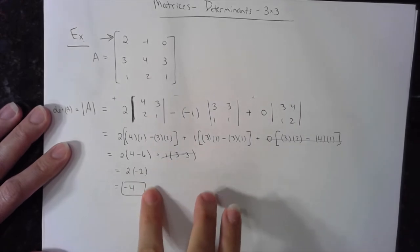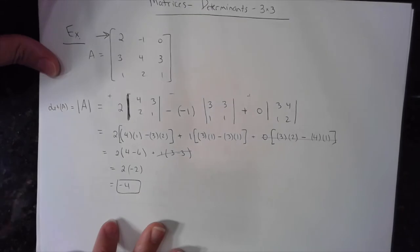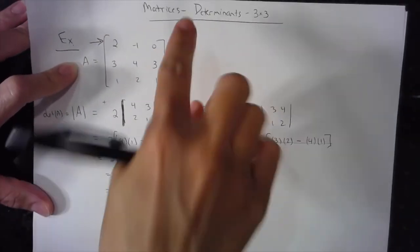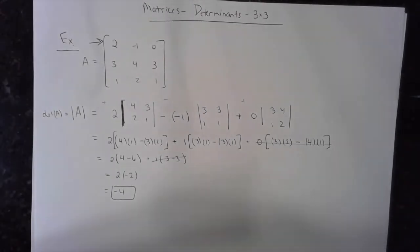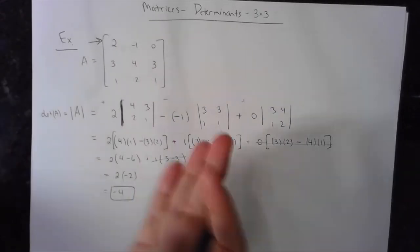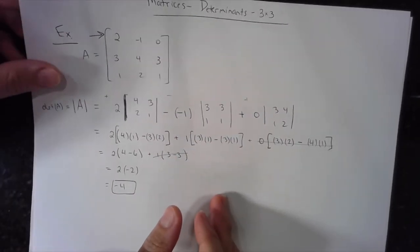When we simplify, we get 2 times (4 minus 6) plus 1 times (3 minus 3). This works out to 2 times negative 2, or negative 4. So the determinant of this 3x3 matrix is negative 4. There's also a trick on the graphing calculator if you're allowed to use it — there's another video with that. But some professors and teachers don't allow it, so you should know both.